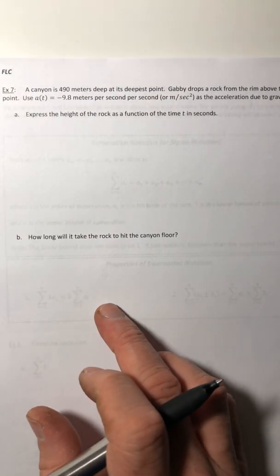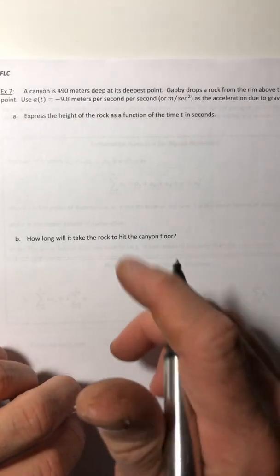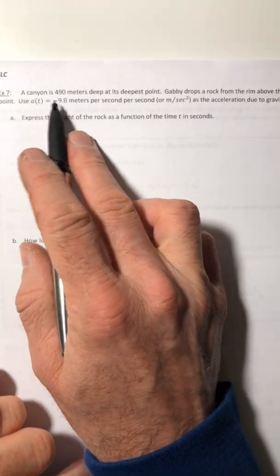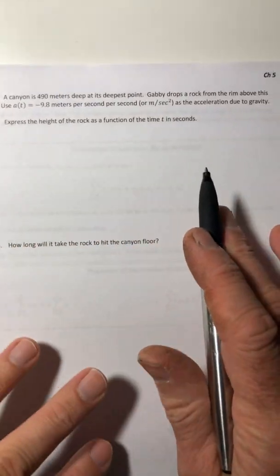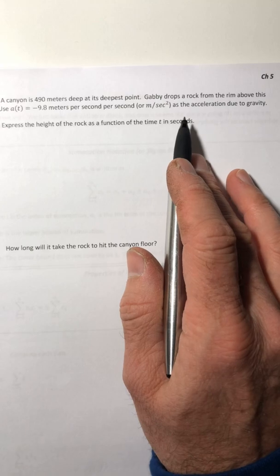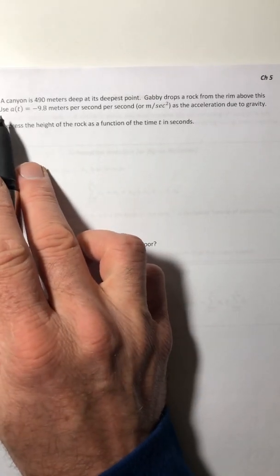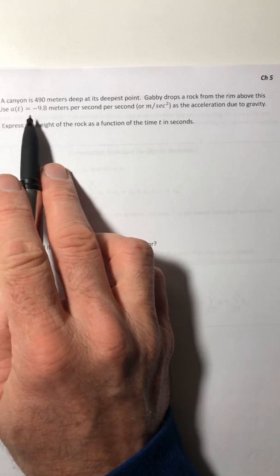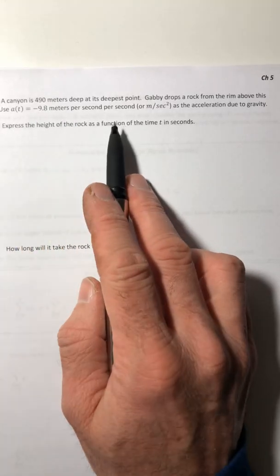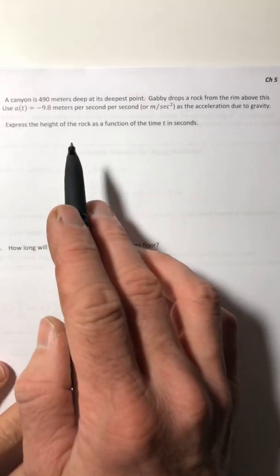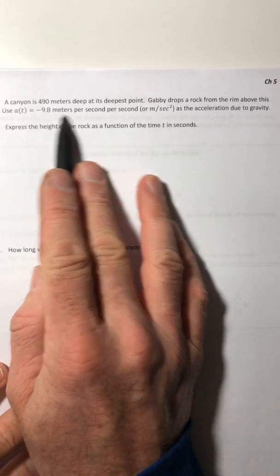All right, we have saved the best for last, this last example. So a canyon is 400 meters deep at its deepest point. Gabi drops a rock from the rim above this point. Don't know why she does, hopefully it's not dangerous. Use a equals negative 9.8 meters per second per second as acceleration due to gravity. So now we switch the units.